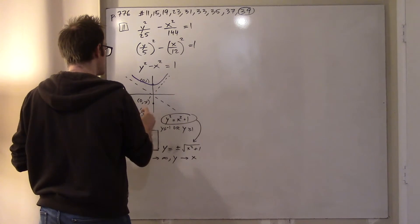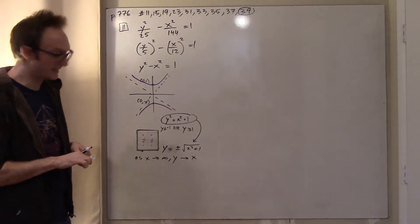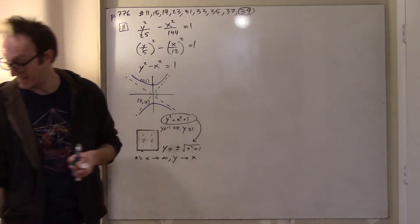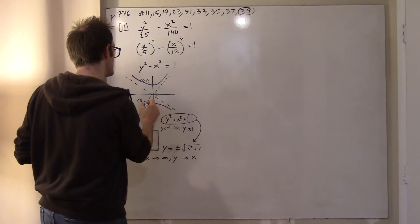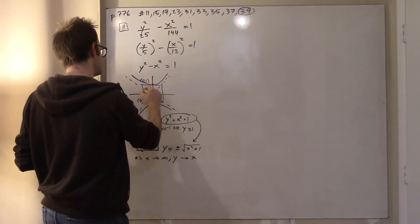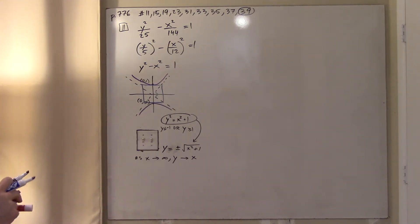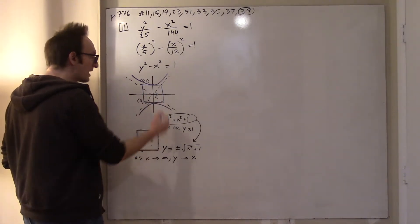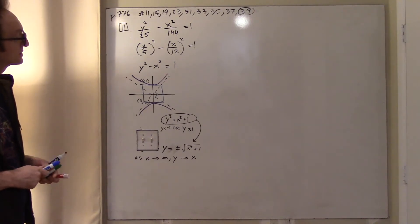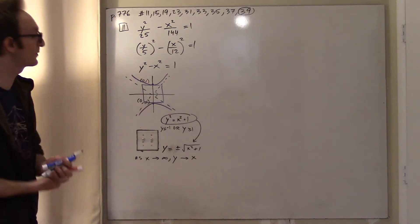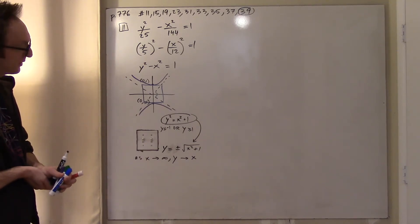This is the unit hyperbola — a so-called square hyperbola, because the asymptotes are perpendicular to each other. The happy box — the box for which the asymptotes are the diagonals — is a 2-by-2 box centered at the origin. That's what makes it a square hyperbola: the rectangle is in fact a square, or equivalently the slopes of the asymptotes are 1 and negative 1.